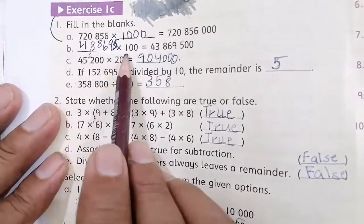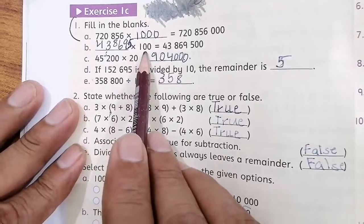Part B, you have to multiply, blank is given multiply by 100.